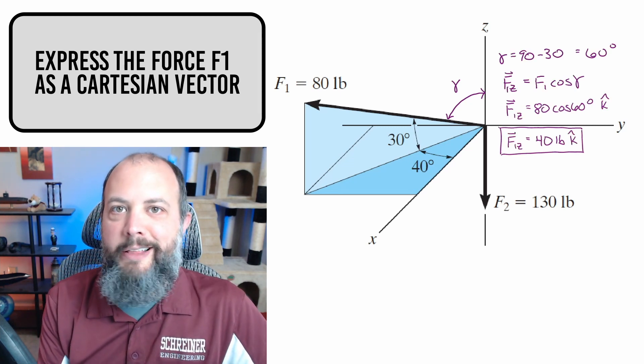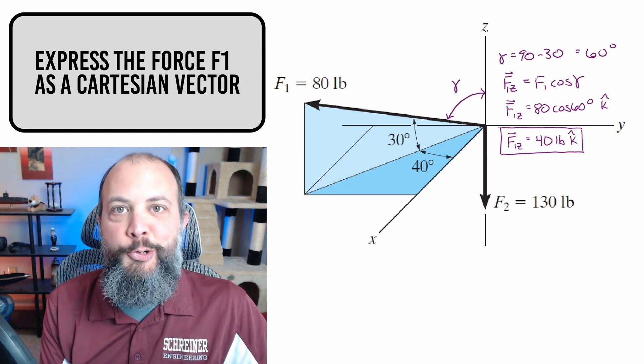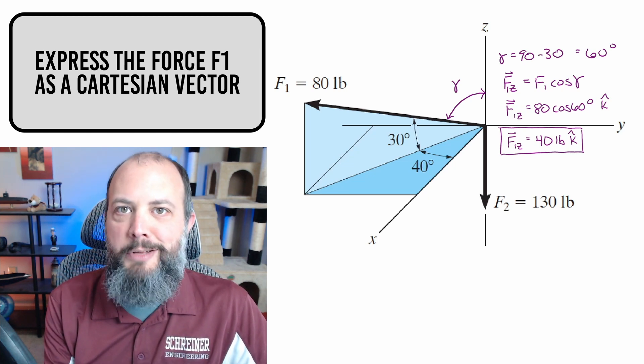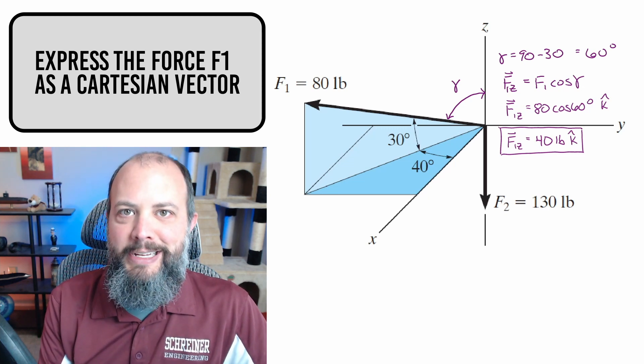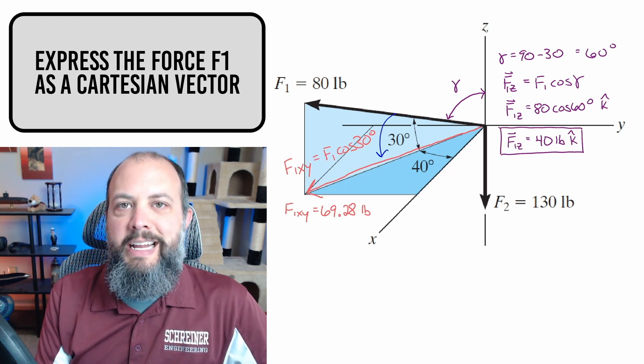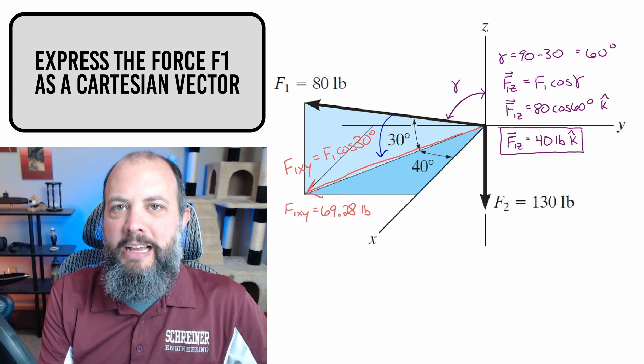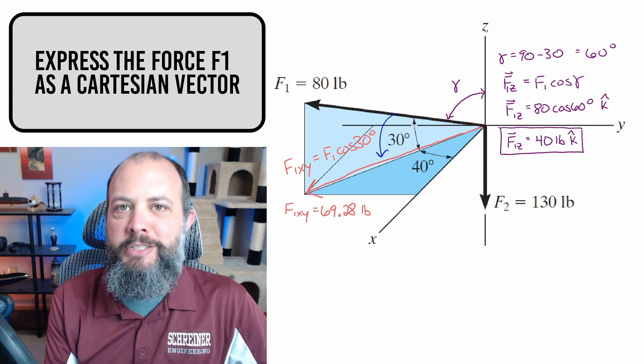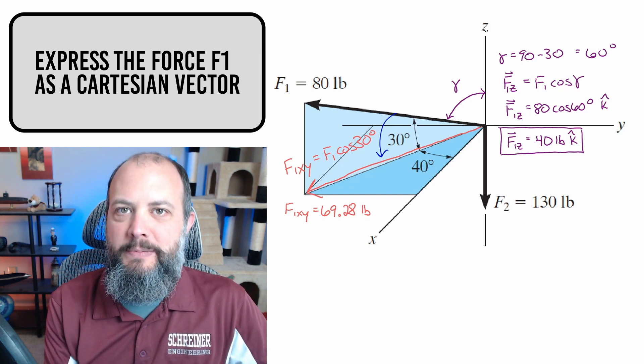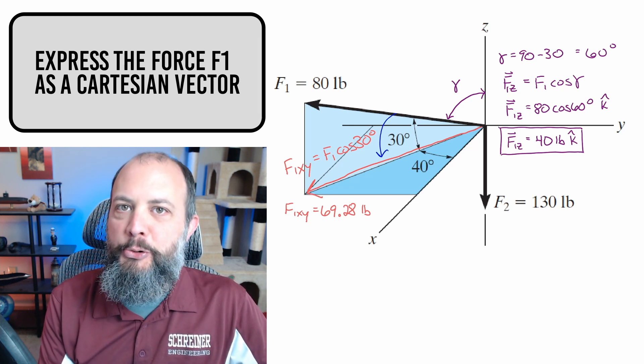First solve for angle gamma. And then the Z component is just going to be the magnitude of the force times cosine gamma, which is going to give us 40 pounds. And then K is just the unit vector in the Z direction.